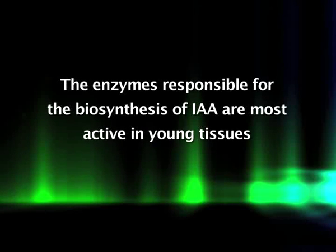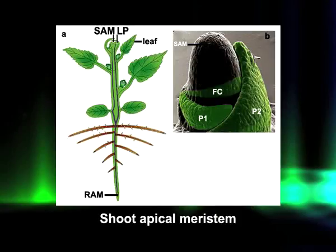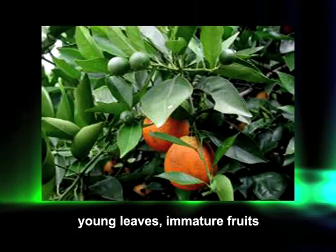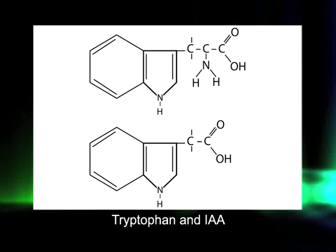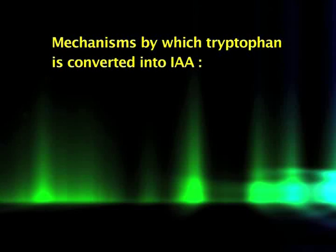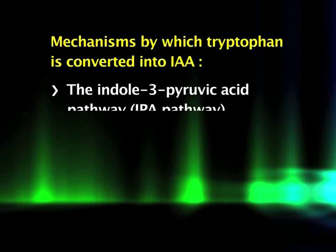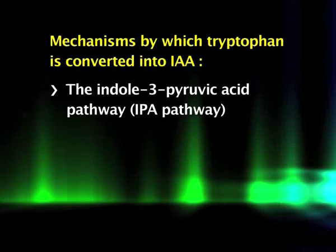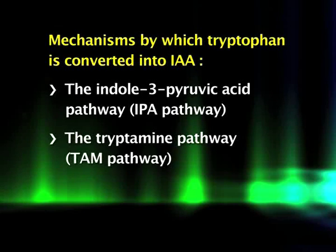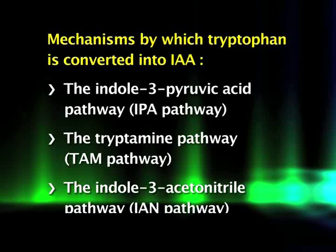The enzymes responsible for the synthesis of IAA are most active in young tissues such as shoot apical meristems, young leaves, and immature fruits, where the highest concentrations of IAA are found. Chemically, IAA is similar to the amino acid tryptophan, which is regarded as a possible precursor of IAA. Available evidence suggests three possible mechanisms by which plants convert tryptophan into IAA: the indole-3-pyruvic acid (IPA) pathway, the tryptamine (TAM) pathway, and the indole-3-acetonitrile (IAN) pathway.